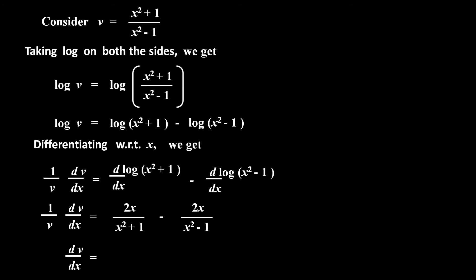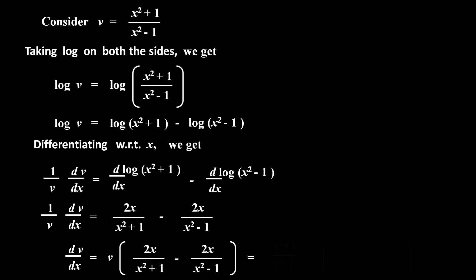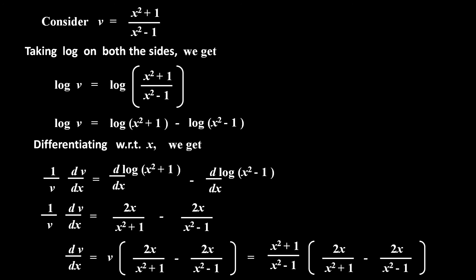Multiplying both sides by v, dv by dx equals v into (2x upon x square plus 1 minus 2x upon x square minus 1). Substituting the value of v, dv by dx equals (x square plus 1 upon x square minus 1) into (2x upon x square plus 1 minus 2x upon x square minus 1). This is statement number 2.